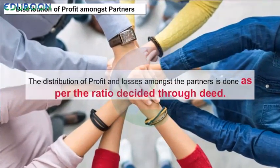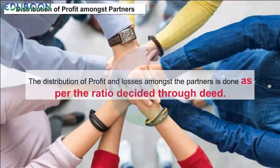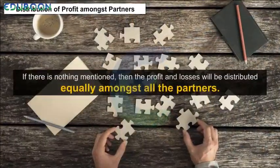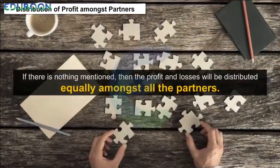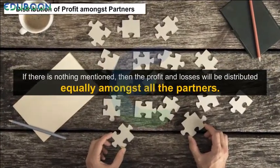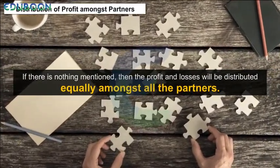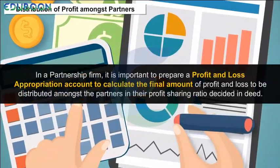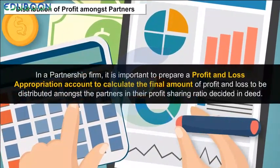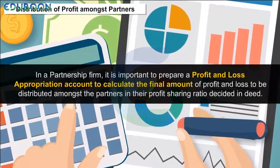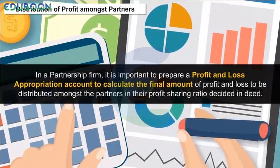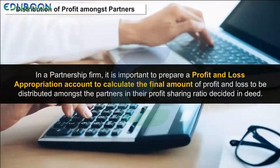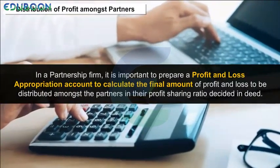Distribution of Profit amongst Partners. The distribution of profit and losses amongst the partners is done as per the ratio decided through the deed. If there is nothing mentioned, then the profit and losses will be distributed equally amongst all the partners. In a partnership firm, it is important to prepare a profit and loss appropriation account to calculate the final amount of profit and loss to be distributed amongst the partners in their profit sharing ratio as decided in the deed.